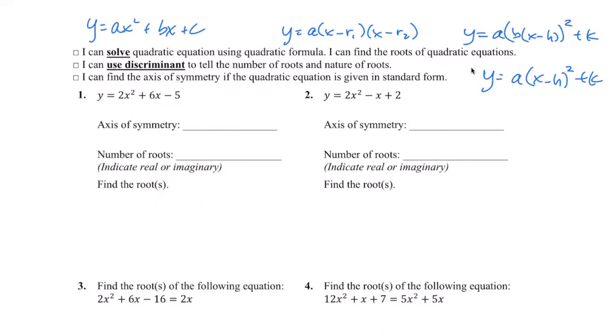Like with standard form, we can tell the axis of symmetry because that is negative b over 2a. And then we can also tell the discriminant, we can use the discriminant to find out the number of roots and that it's b squared minus 4ac.